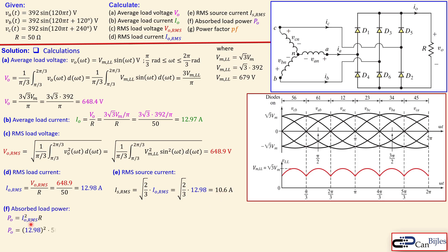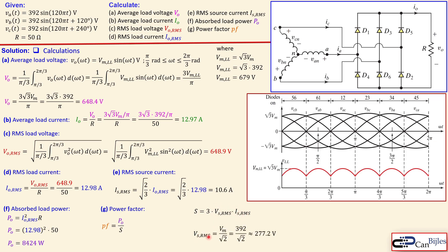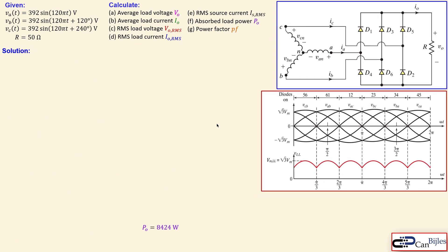The absorbed load power is RMS load current squared times the resistance: 12.98 squared times 50, giving 8,424 watts. The power factor is the load power divided by the apparent power. The apparent power is three times the source RMS voltage times the source RMS current. The source RMS voltage is the phase peak over square root of two, giving 277.2 volts, and with source current RMS of 10.6 amps, the apparent power is 8,815 volt-amperes. The power factor is therefore 0.9556.